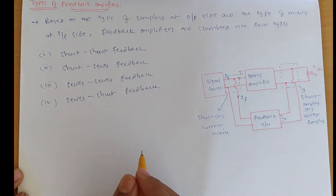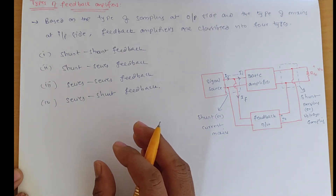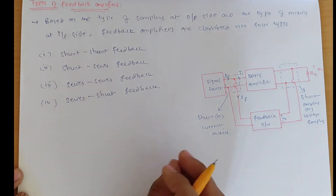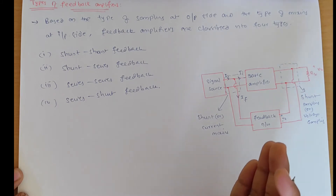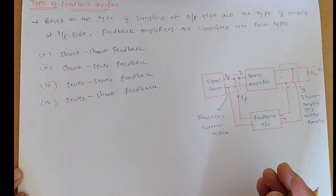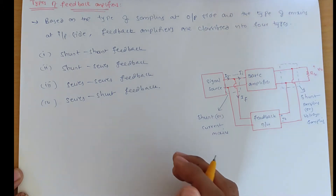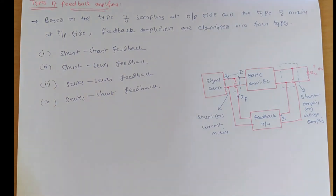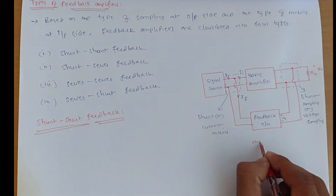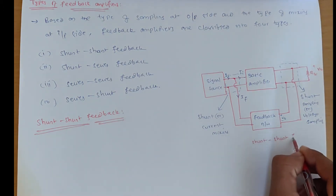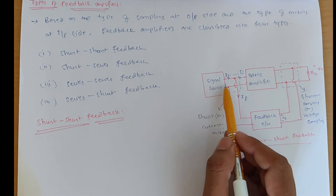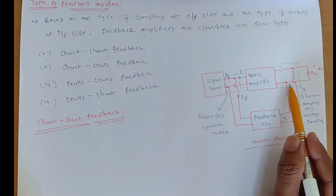These feedback topologies indicate how the feedback network is connected to the signal source and load resistor — that means mixing is present at the signal source and sampling is present at the load resistor. Now we will see the shunt-shunt feedback. This is the block diagram of shunt-shunt feedback, where the feedback network is connected shunt with the signal source and shunt with the load resistor.